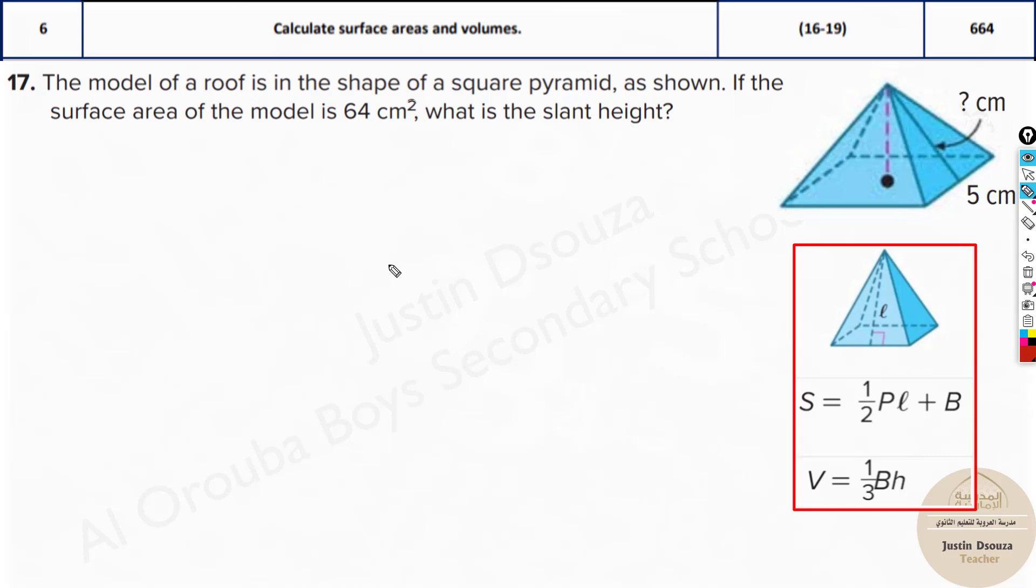Using that formula, let's substitute what we know. The formula is S = ½PL + B. S value is known. L is unknown. Here what we know is only the side, and the slant height is unknown. We do not know the height but we do not require it. Only for the volume the height is required.